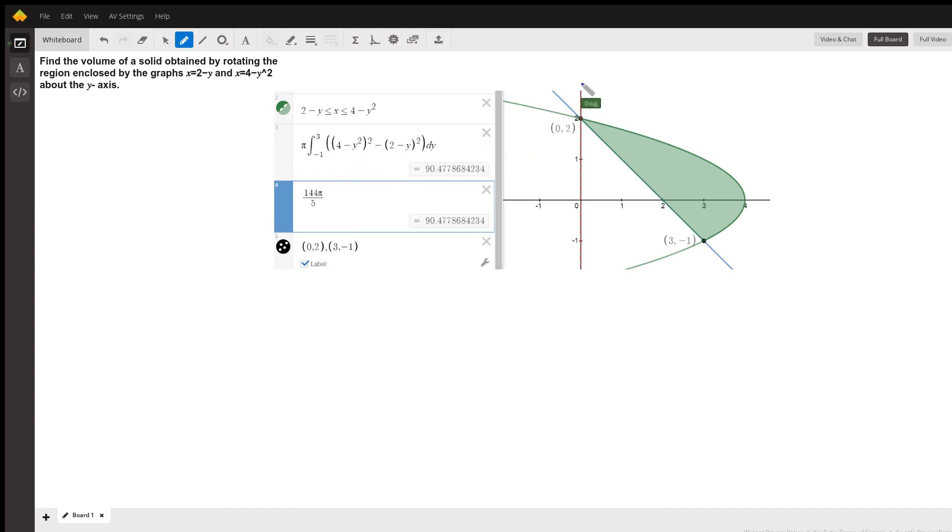We're going to revolve this green region about this x-axis, the dotted red line.